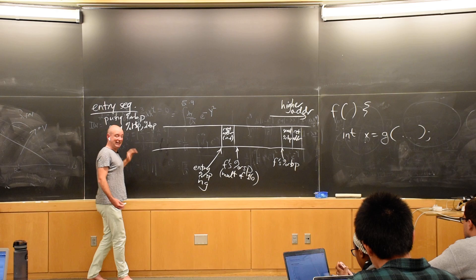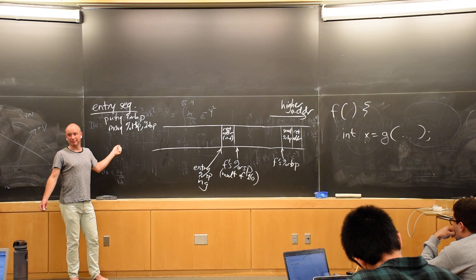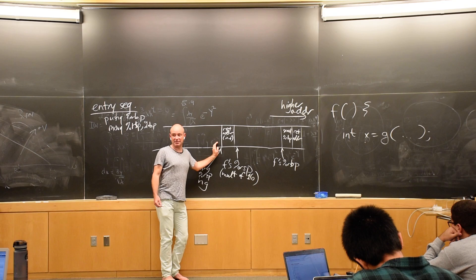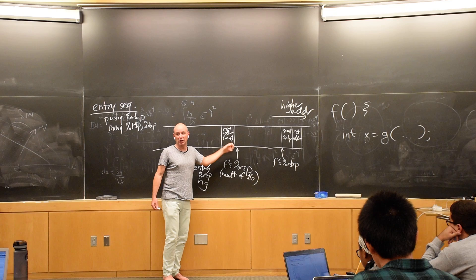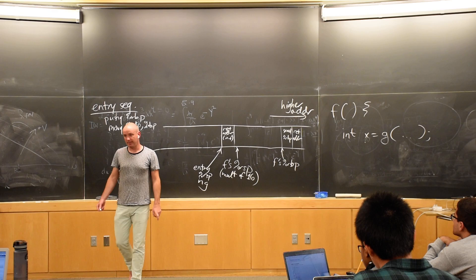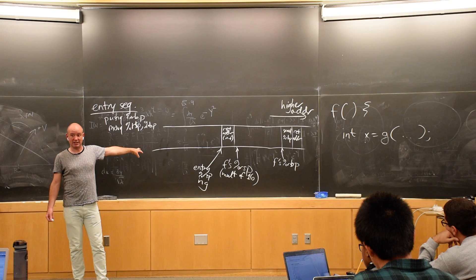And then in the exit sequence, those things are undone in sort of like reverse order. So first we'll add a bunch of numbers, add that number to RSP. And then we'll pop Q the old RBP, and then finally ret Q, which pops the return address off the stack and jumps to the corresponding address. Okay? So that at a high level is the function entry and exit sequence.